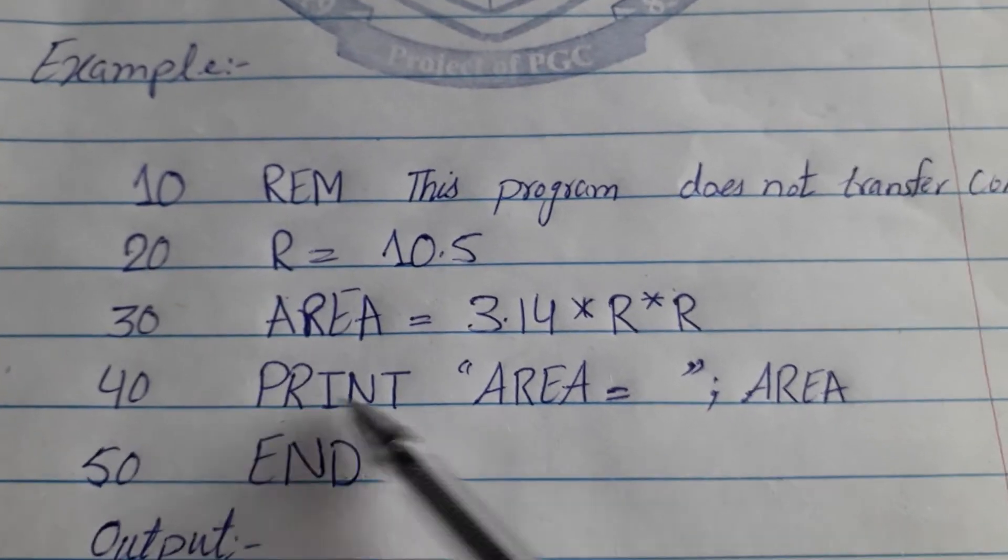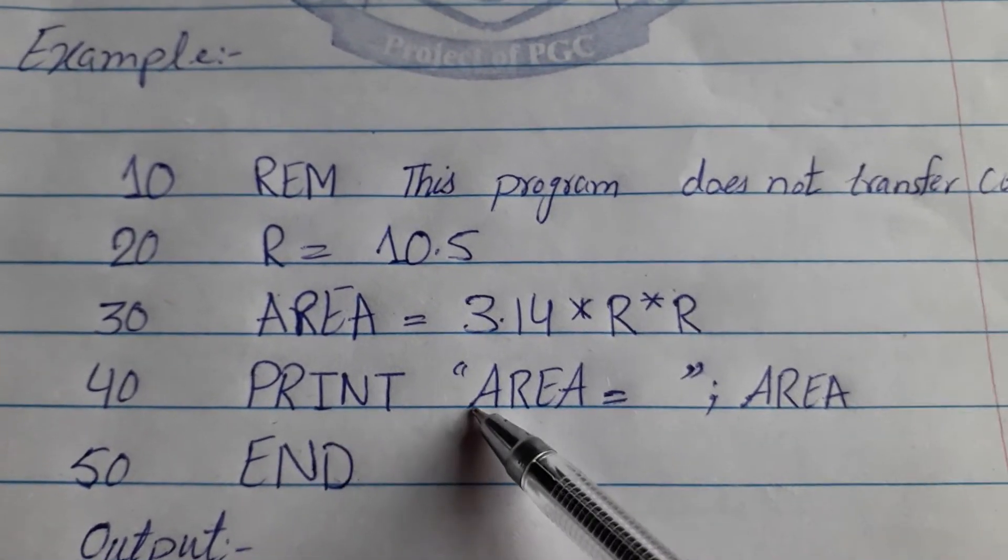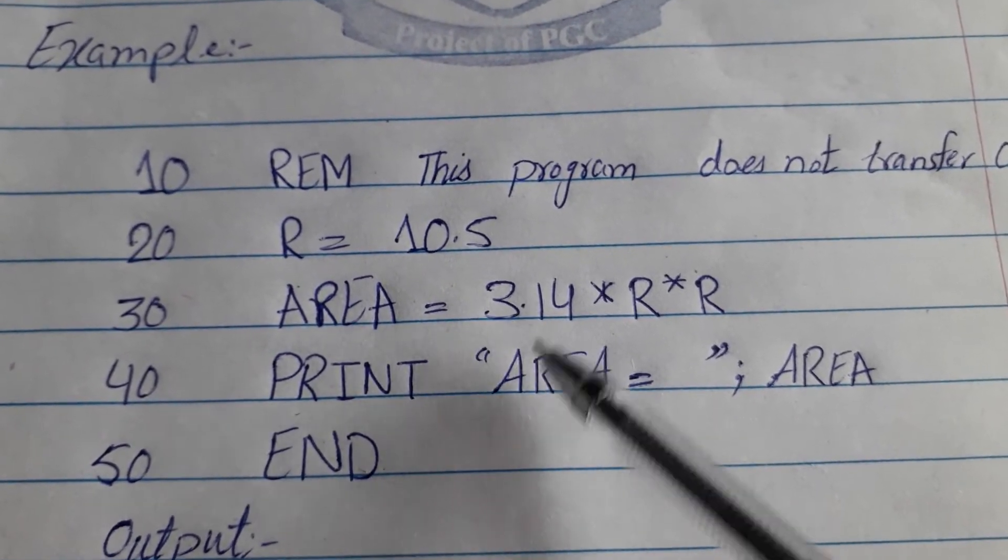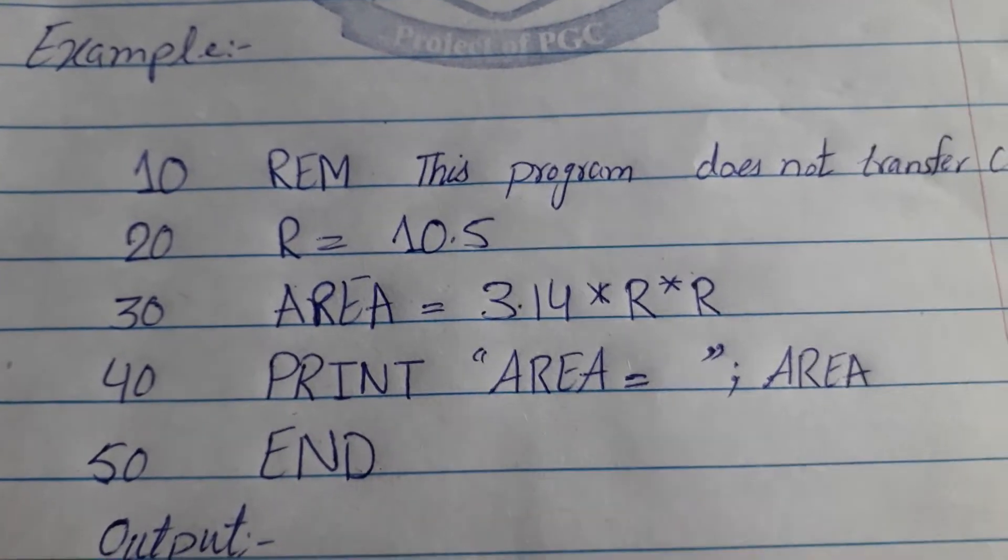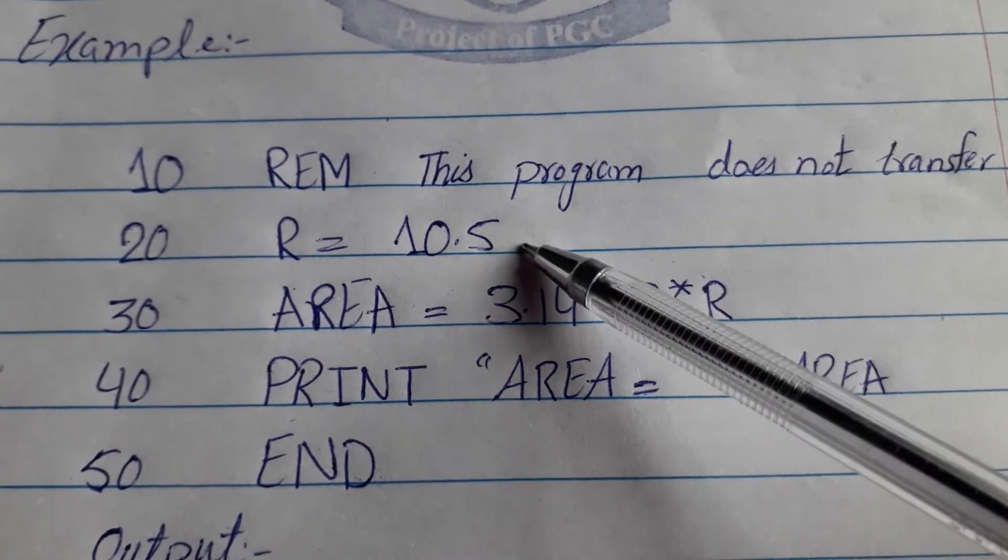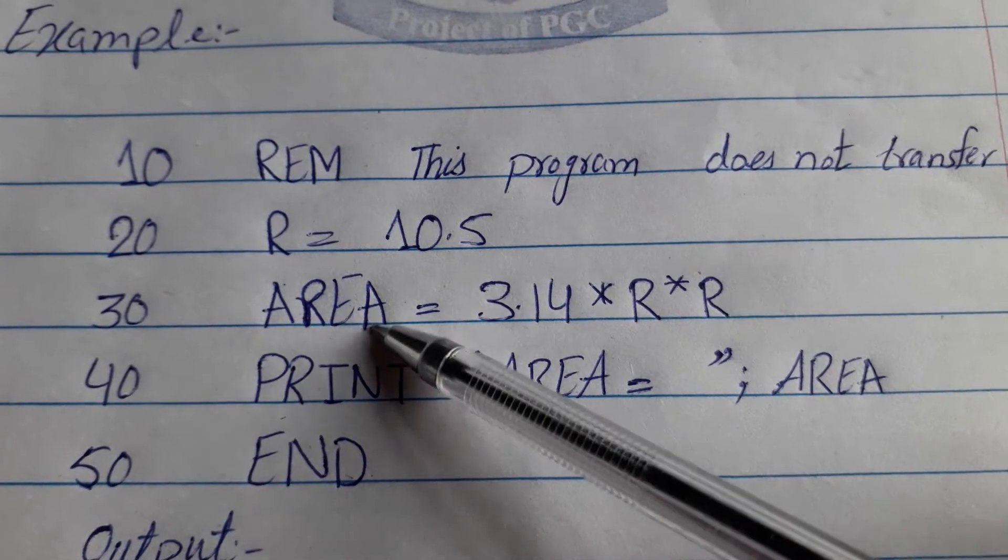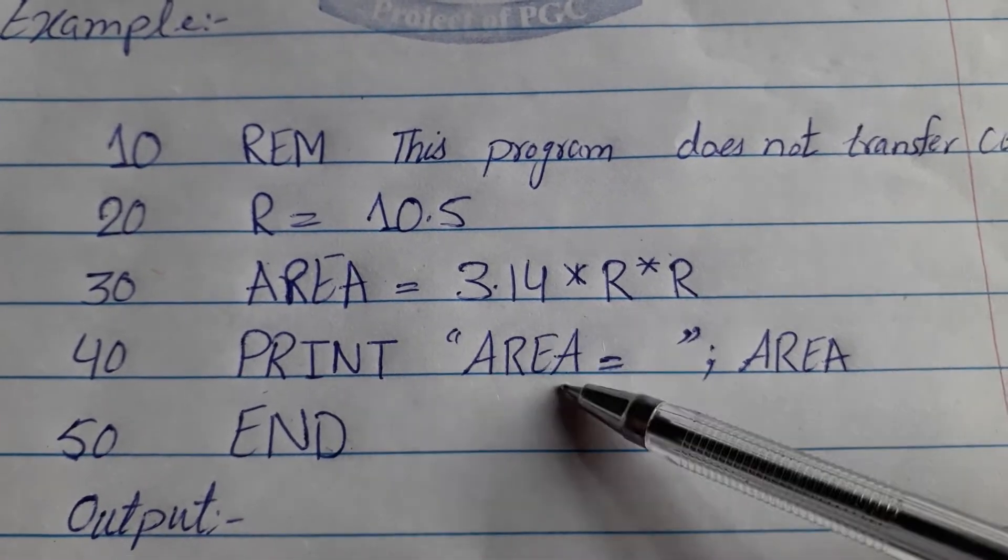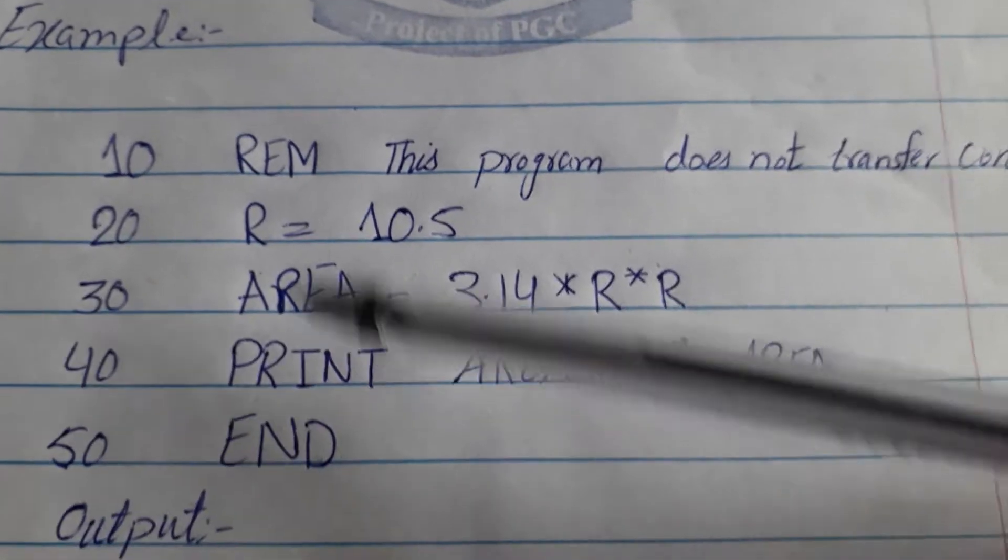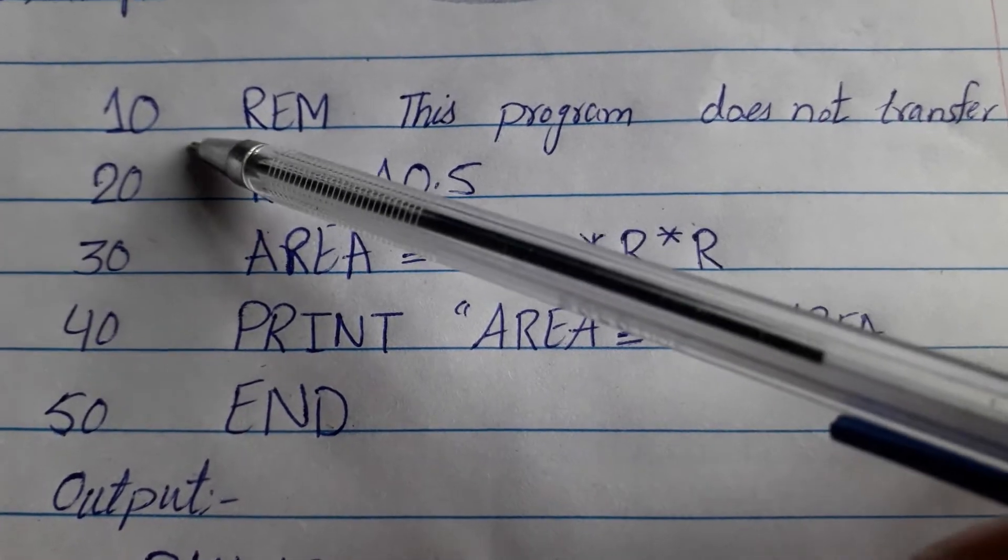I have a program in which I have to print the area. Now, I have given the requirements for the area. I have told the radius. I have given the R value to it. Then, I have told the area to find out and print it. So, what did I do first? Line number 10.